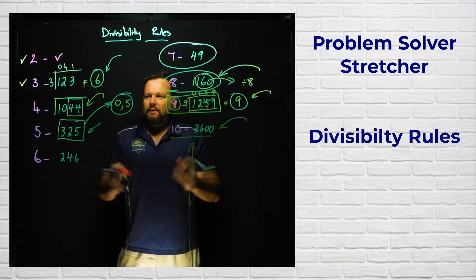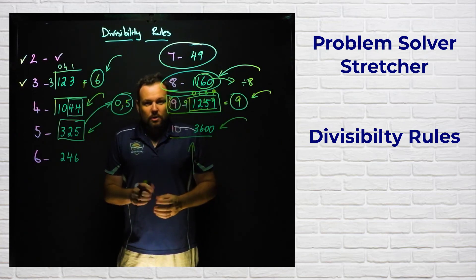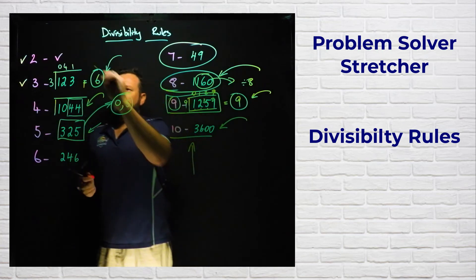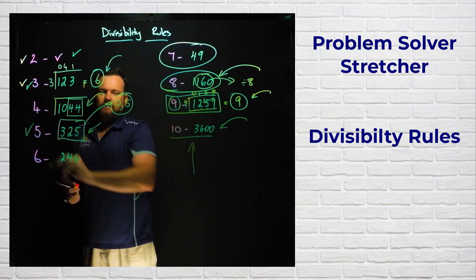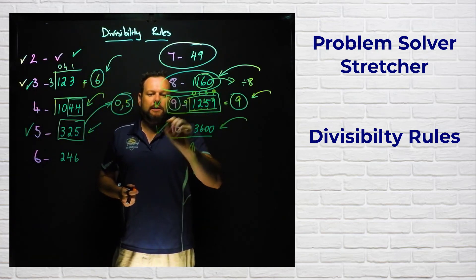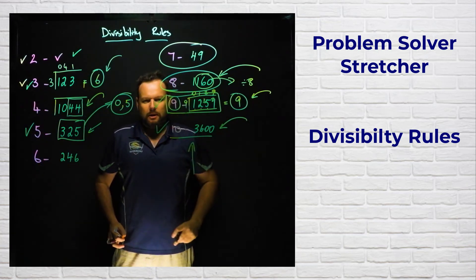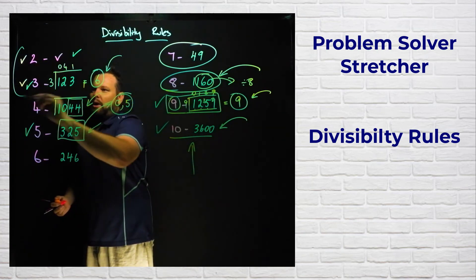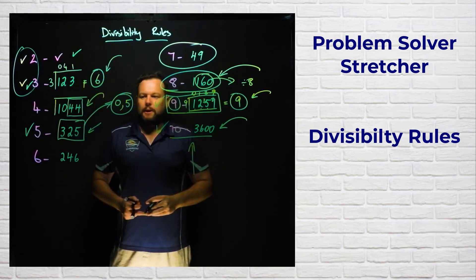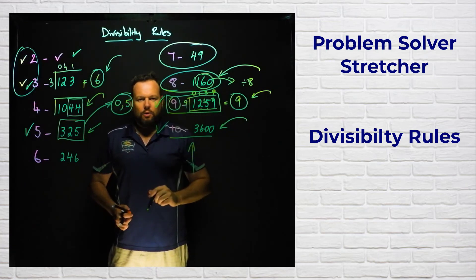My go-to ones that I always use all the time are 2, 3, 5, 9, and 10. I don't really use 4, 6, 7, or 8. You may be different. You may think six is a great one to use because I just need those two to work for me. That's divisibility rules. Good luck, hope you got it correct.